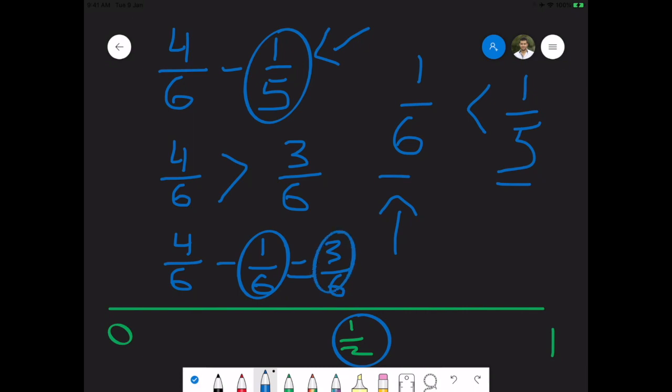But in my equation, I have to subtract 1 5th, which is slightly bigger than 6th, so that will not get me that far away from a half. So, this equation is closer to a half.